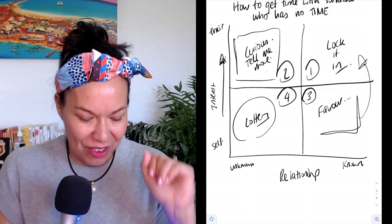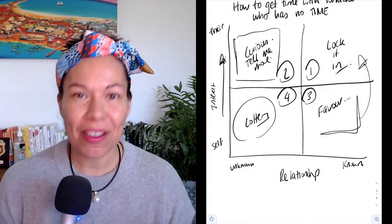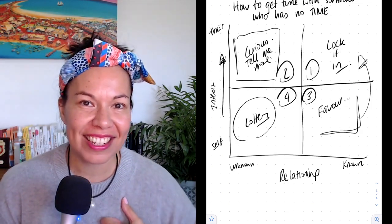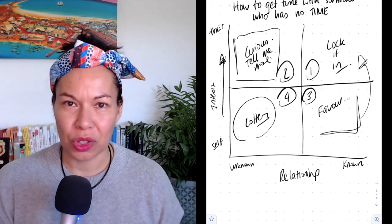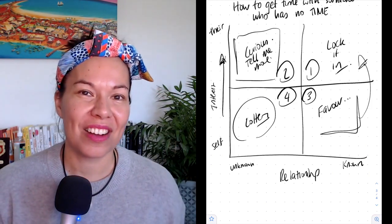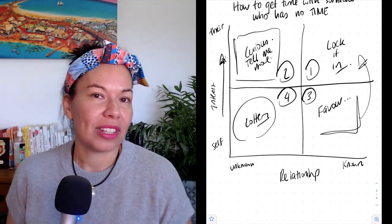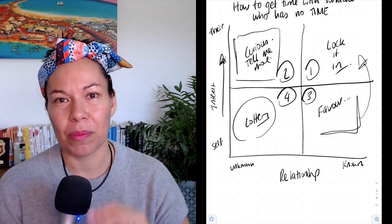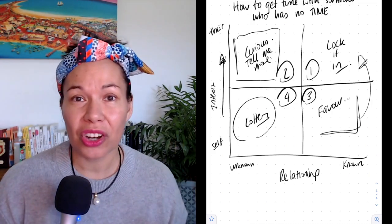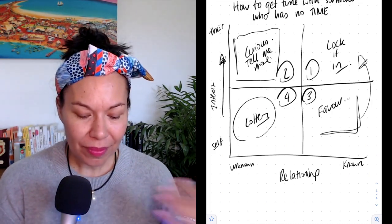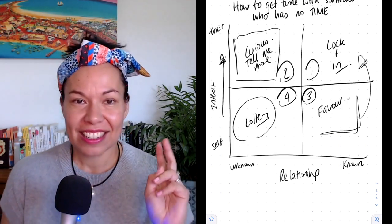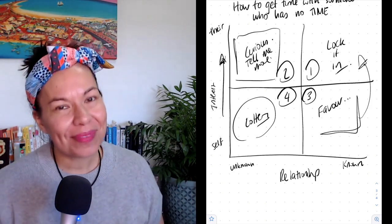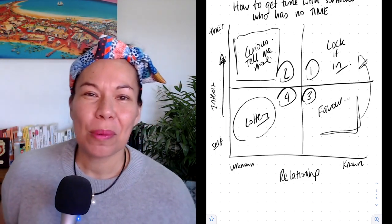So those are the four elements. How do you get time in someone's calendar when they have no time? Two elements: interests — always appeal to their self-interest, try to cast what you want aside. And the second is the relationship — how connected are you to that person already, are you known to them, do you have a strong relationship, or are you an unknown commodity not even on their radar? The four quadrants: number one, lock it in. Number two, curious, tell me more. Number three, this is a favor. And number four, it's a bit of a lottery. Hope this helps — look forward to chatting to you next time.